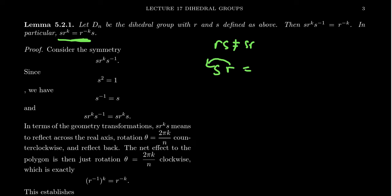Because the operation is non-abelian, there is a price to pay. The cost of moving an R past an S is that you have to take the inverse of R. Every time an S passes by an R, you invert it — you switch from a counterclockwise to a clockwise rotation. That's what the equation S R^k = R^(−k) S is telling us.